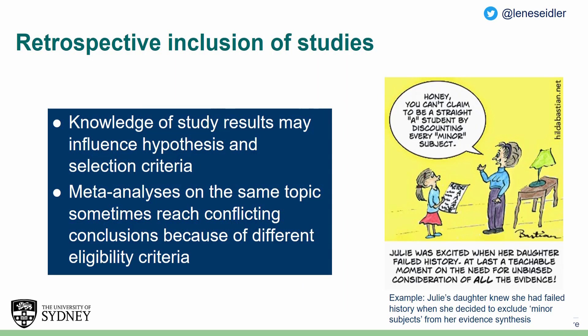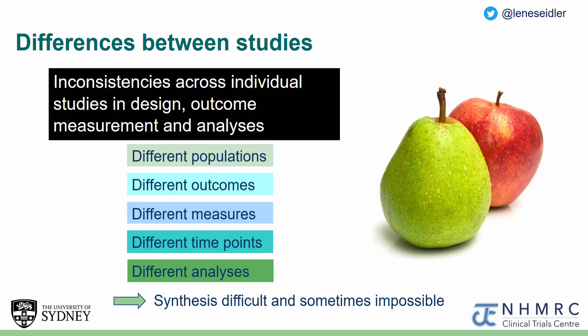Additionally, most systematic reviewers know which studies are out there and what their results are, and this knowledge may affect the meta-analysis results. This can be illustrated using the example of Julie's daughter, who knew that she had failed history when she decided to exclude humanities from her evidence synthesis and thus concluded that she was a straight A student. Another problem associated with traditional meta-analysis is that often we are trying to compare pears with apples — studies conducted in different populations or collecting different outcomes, which can make the synthesis difficult and sometimes even impossible.